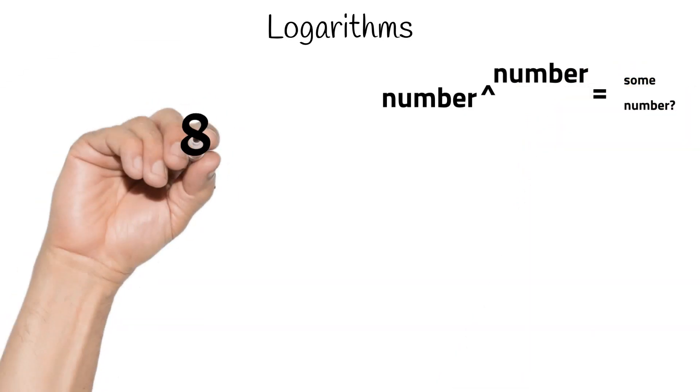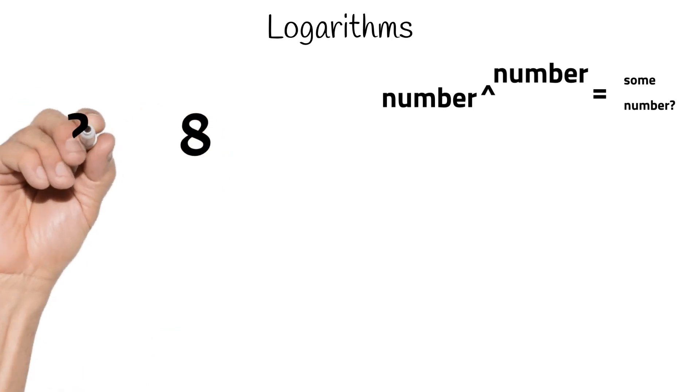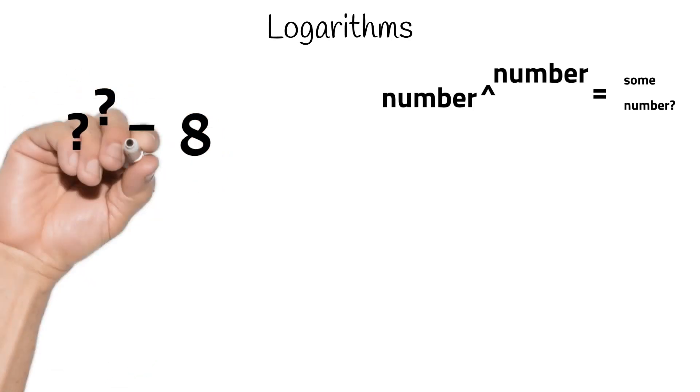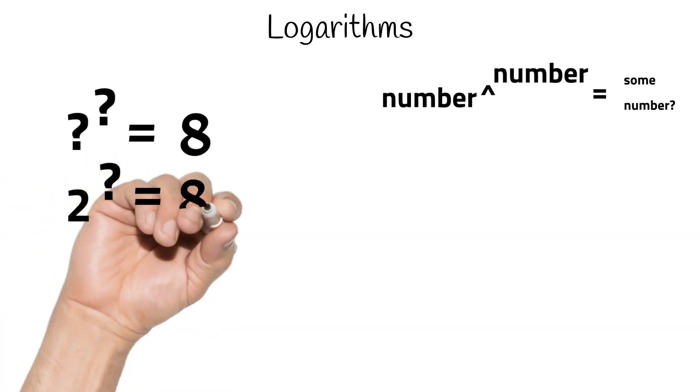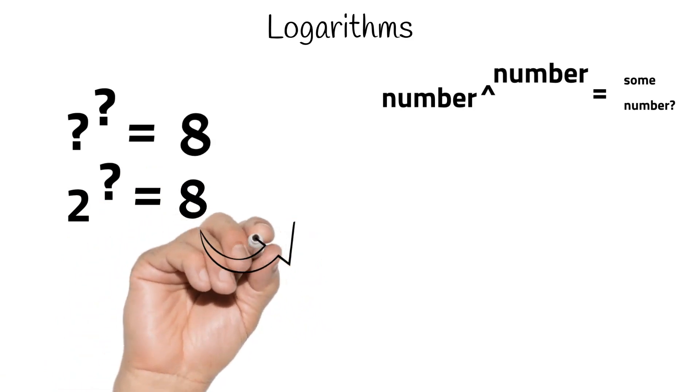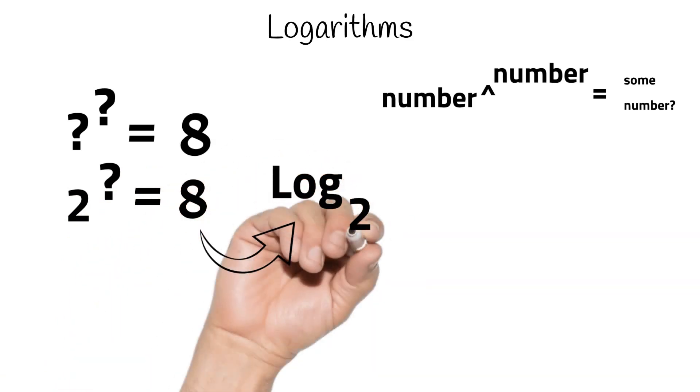Let's take the number 8 into consideration. So we want to raise some number to some power to get 8. In computer science, unless specified otherwise, we can always assume that the number that we want to raise to some power is 2. So let's rewrite this. So we want to raise 2 to some power to get 8. So this same equation can be written like this, where this 2 here is called the base.